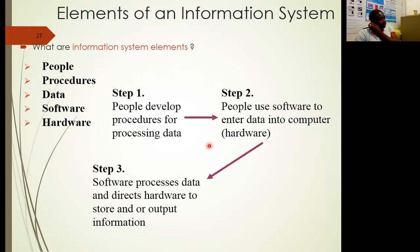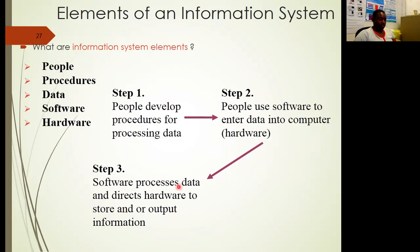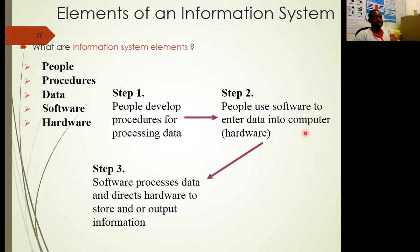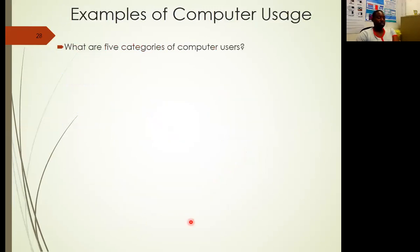When you have a computer, the presence of the computer allows you to produce what we call an information system. An information system involves people, procedures, data, software, and hardware. People develop the procedures for processing data and use software to enter data into the computer, then the software processes the data through the hardware to store and output the information. As you can see, the human being is also part of the information system — you develop the procedures and also input data for the computer to process, store, and output.